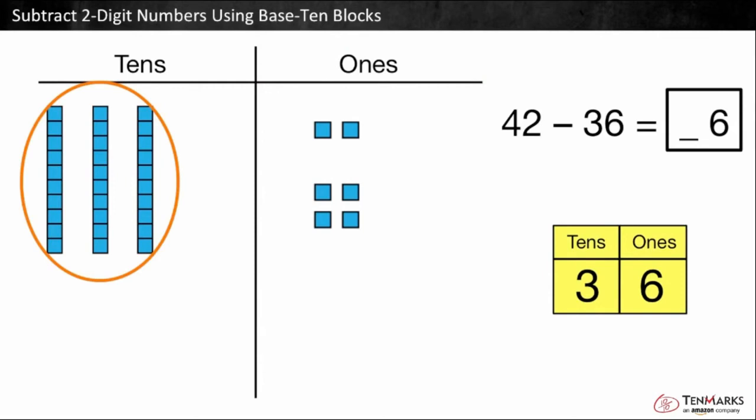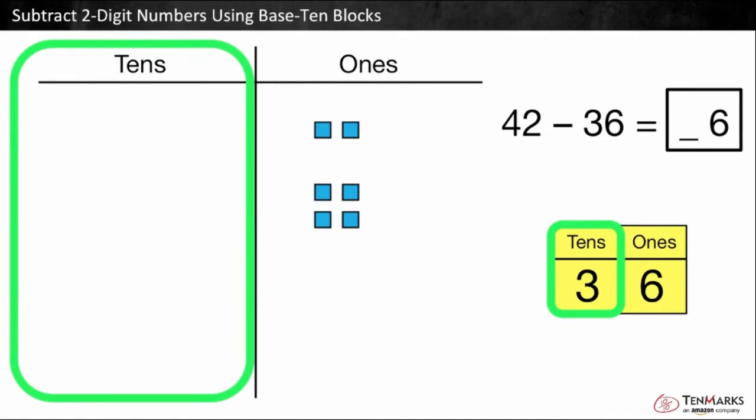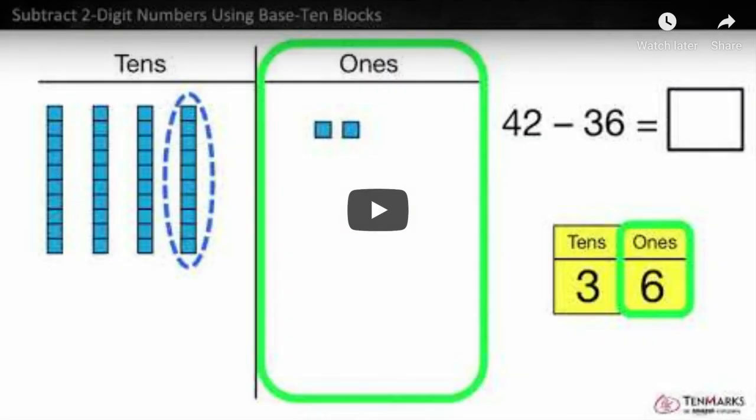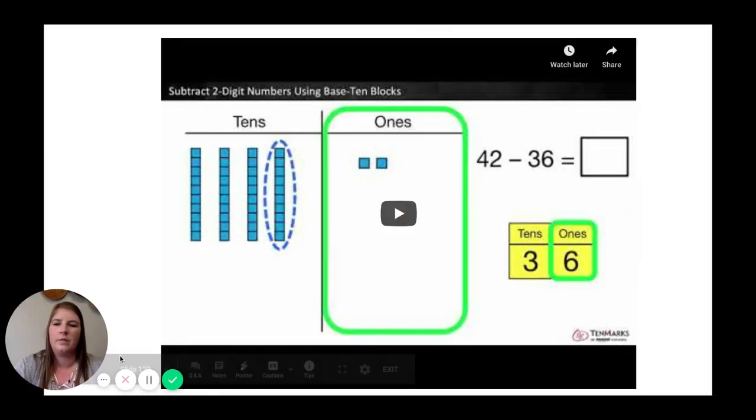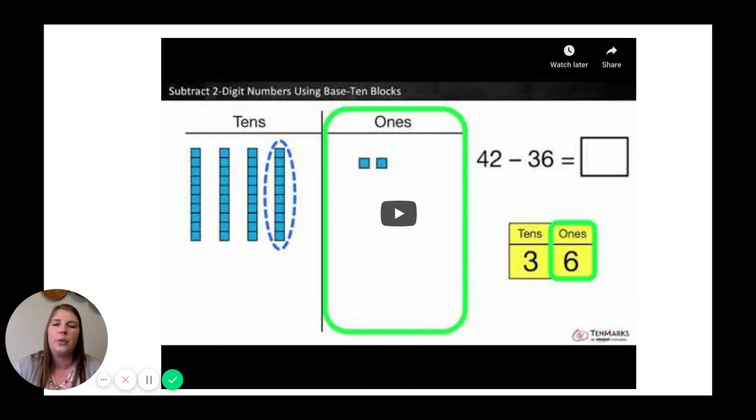Now we subtract the tens. Can we take three tens away from three tens? Yes. There are zero tens left. What is the difference? There are zero tens and six ones left. 42 minus 36 equals 6. In this video, you learn to subtract two-digit numbers using base ten blocks. So those are two great lessons on how to use base ten blocks to add and subtract two- and three-digit numbers.